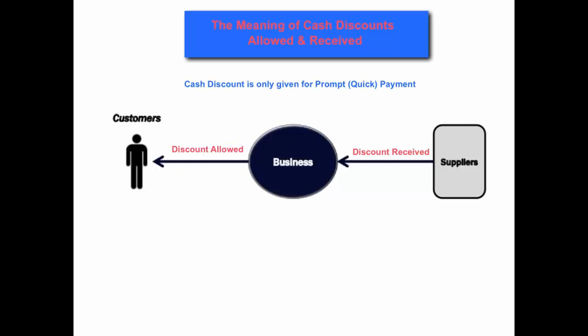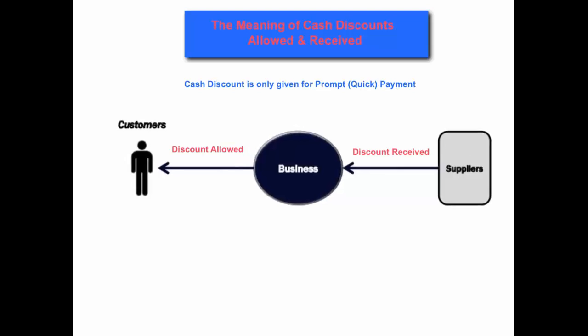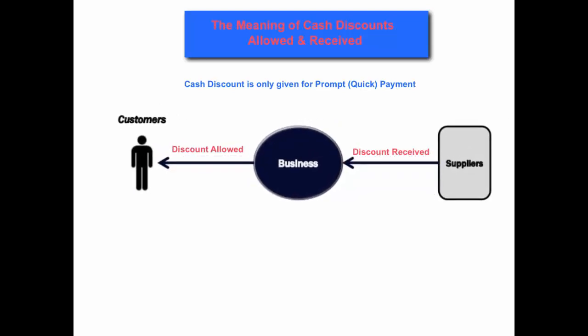Now the difference between a discount allowed and a cash discount received depends on the business and the supplier. Basically, if we give our customer a discount then that would be considered to be a discount allowed, because we're allowing them a discount off the invoice bill if they pay us quickly. If we receive from our suppliers a discount that is to try and encourage us — the business — to pay early, that would be known as a discount received.